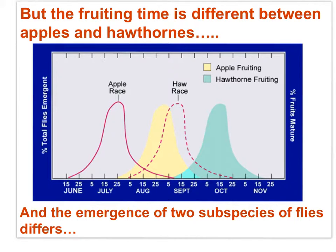One population will lay its eggs on the apple, and one that will lay its eggs later in time on the hawthorn. Thus, there is reproductive isolation of two maggot fly populations. You can see here the two species of apple maggot fly emerging — sympatric speciation is occurring.